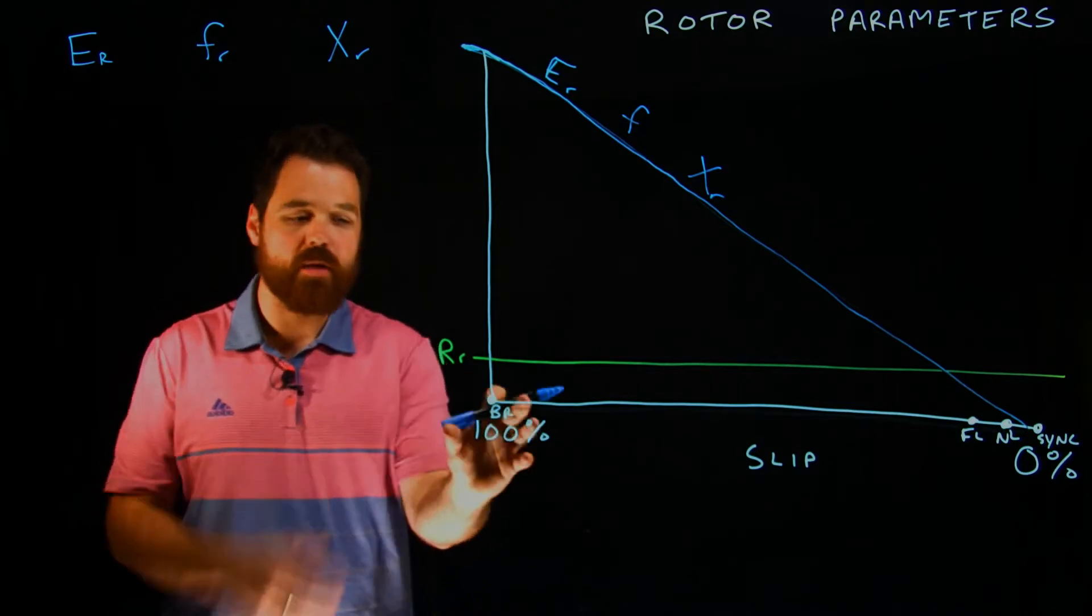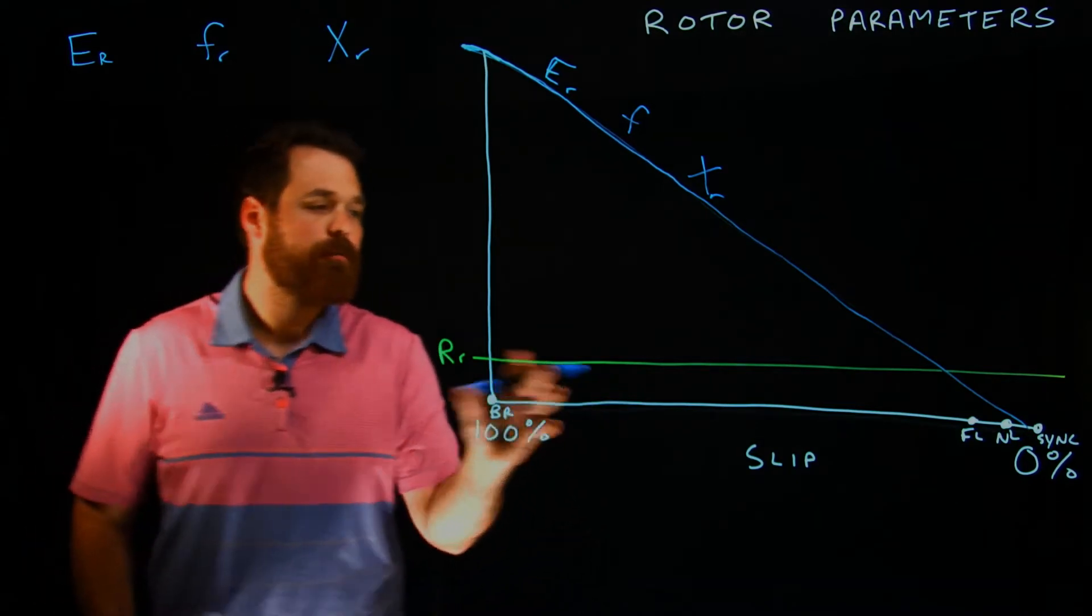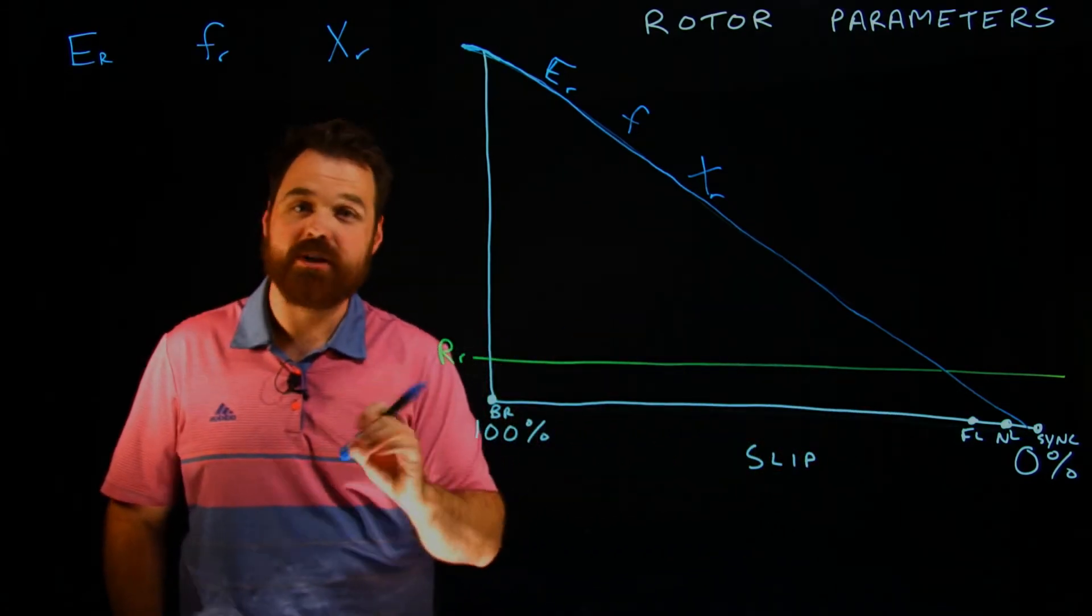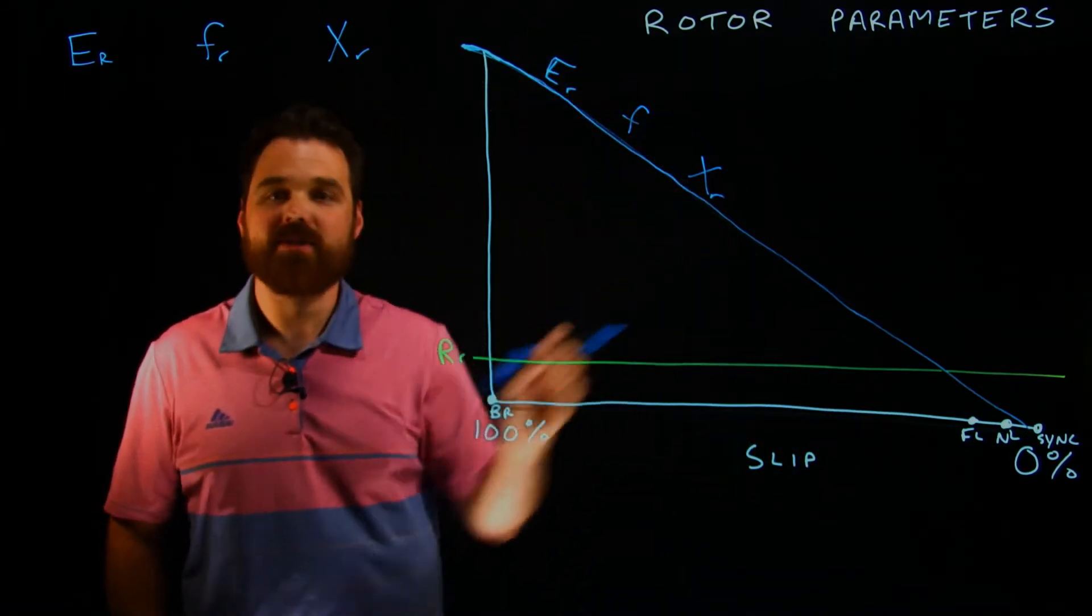So we would just take our blocked rotor value and times the slip. And that's going to give us those values.